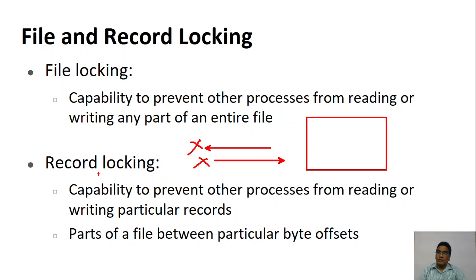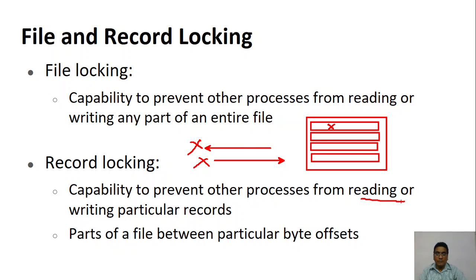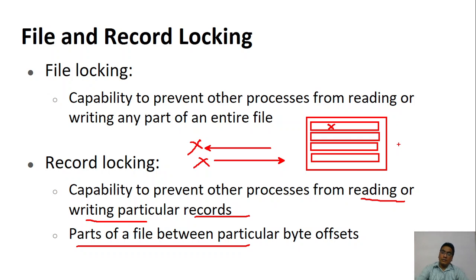Record locking is slightly different. These files may contain some data — there is one record, another record, and so on. Record locking means the entire file is not locked; one particular record is locked while the others are free to be used. It is the capability that prevents other processes from reading or writing a particular record — specifically, some part of the file within certain byte offsets.